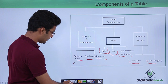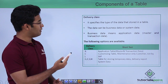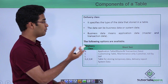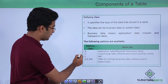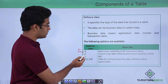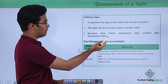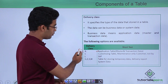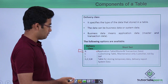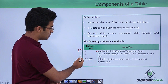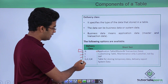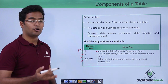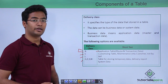Let us see what exactly delivery class is. Delivery class specifies the type of data that is being stored in the table. In our case we provided A. A is simple business data — that is, application data itself — so we are maintaining an application table by providing A as the type. Moreover, there are multiple other options: we can provide C, L, G, E, F, or W. These are the different delivery classes available as options in the database table.